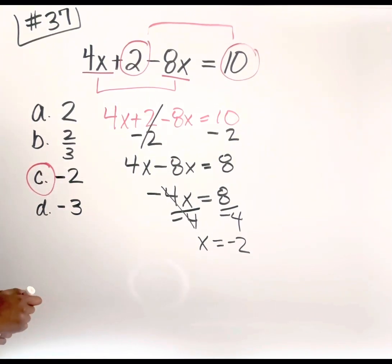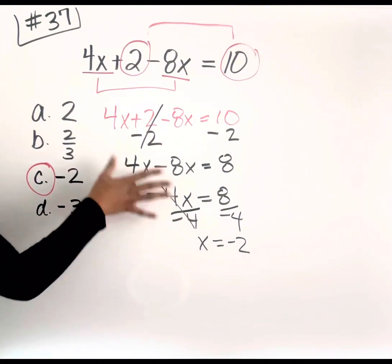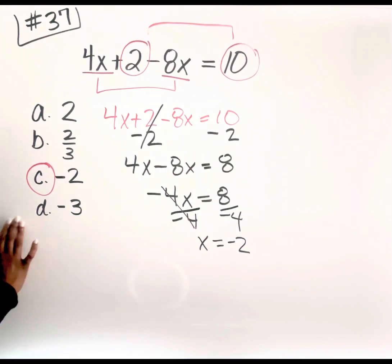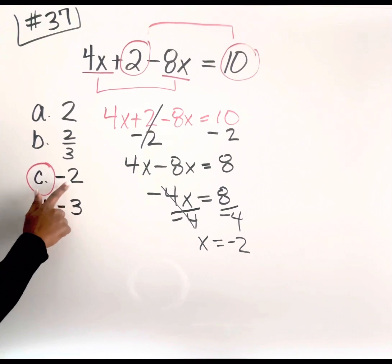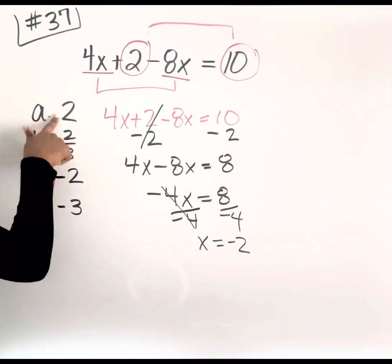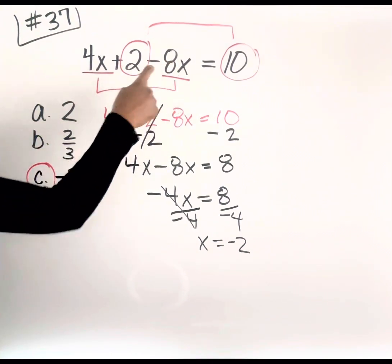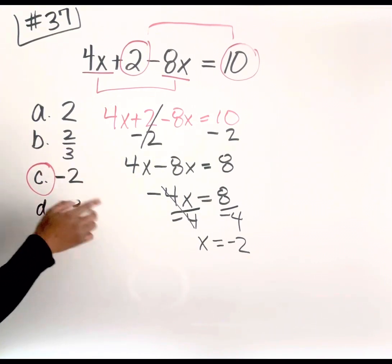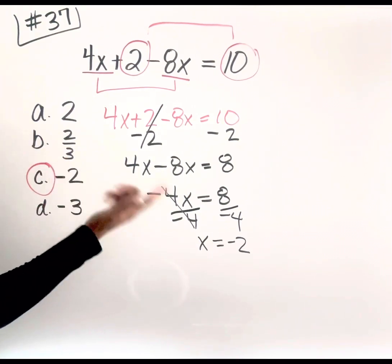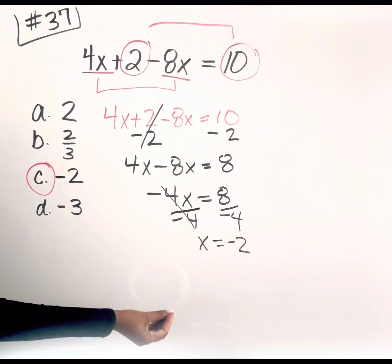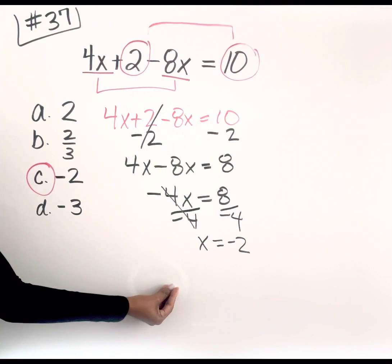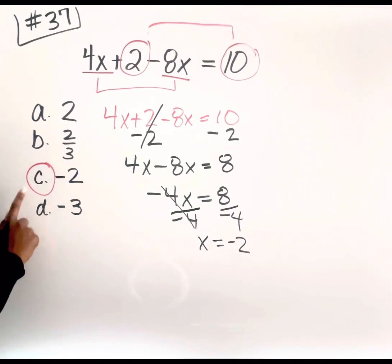One thing I always tell people: if you have a hard time figuring it out the original way, you can always work backwards from your answer choices. Because the test is multiple choice, you can take each answer, plug it in for X, simplify, and whichever one gives you the correct result — in this case C — that's how you can get the answer as well. If you're in a time crunch, work backwards on the given answers and you'll be good to go.